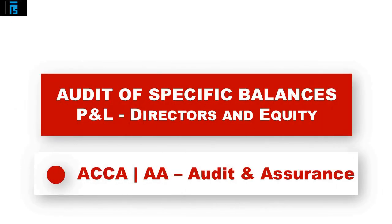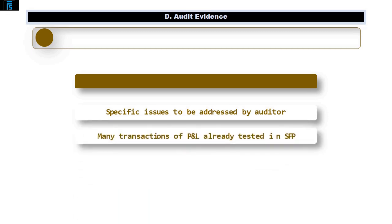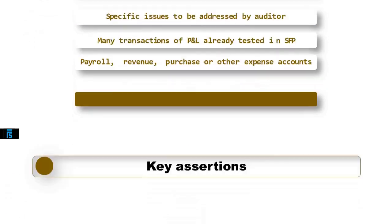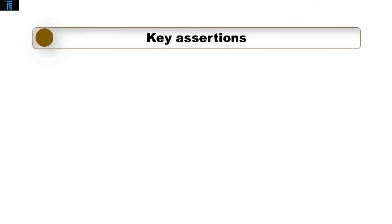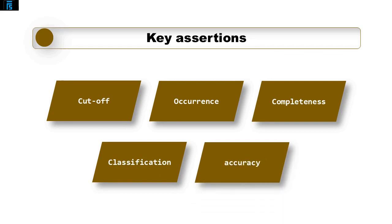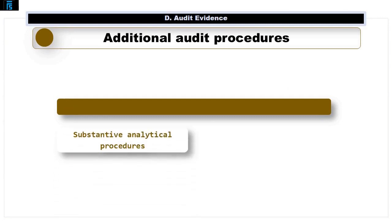This video covers practical ideas for auditing the statement of profit and loss, directors' emoluments, and equity and reserves. Remember that much of the transactions in the statement of profit and loss have already been tested via the corresponding debit or credit balance in the statement of financial position. The key assertions for profit and loss balances are cutoff, occurrence, completeness, classification and accuracy.